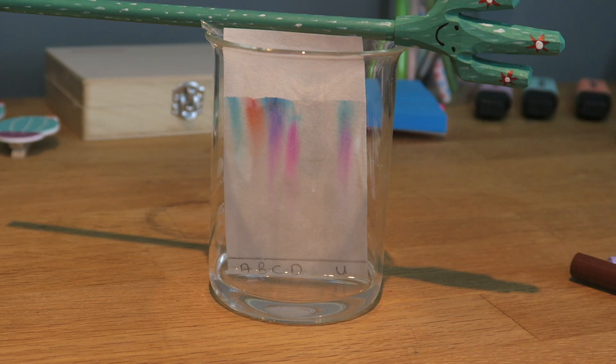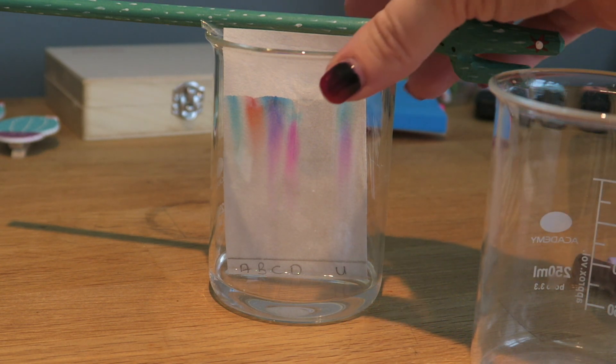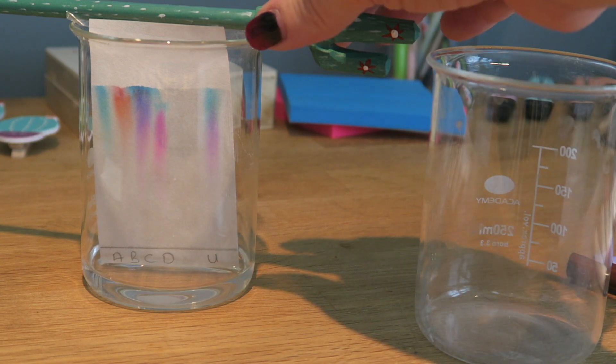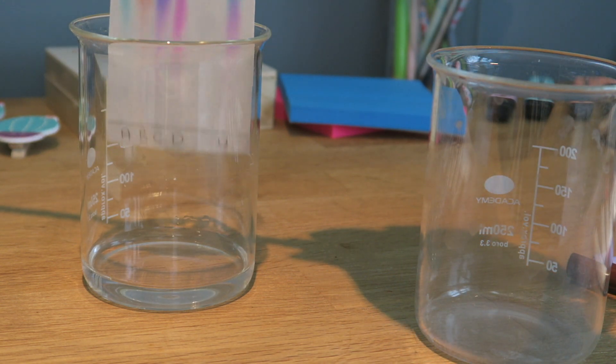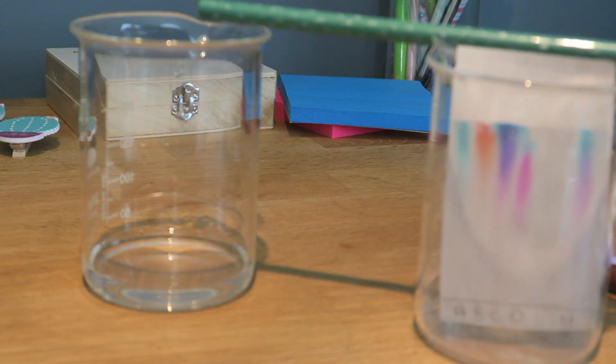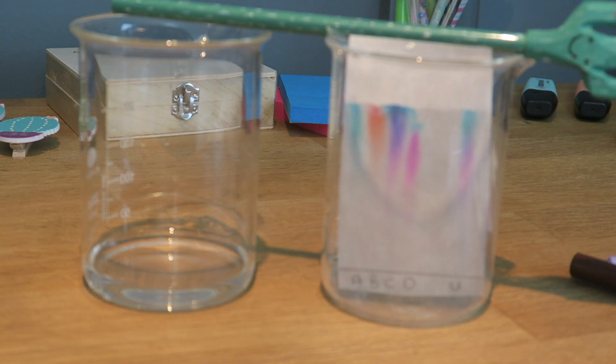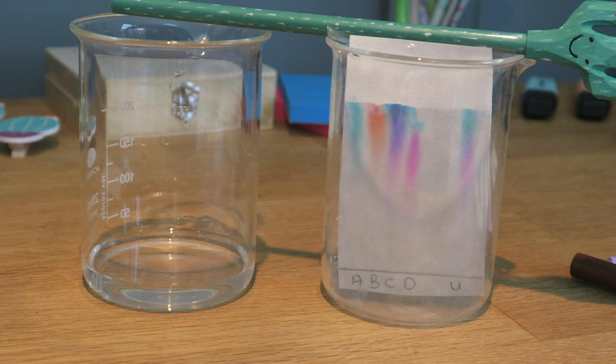When the solvent front gets nearly to the top we can stop the experiment and look at the results. I'm going to stop it by moving the chromatography paper out of the liquid and leaving it in there to dry. You can leave it for some time to dry or you can use a hairdryer to help it.